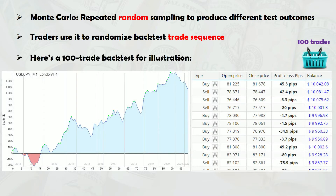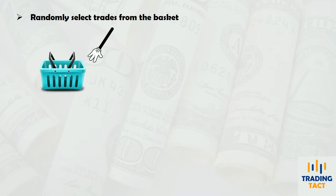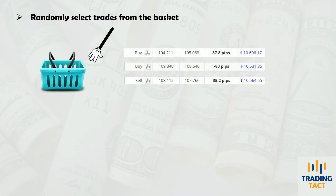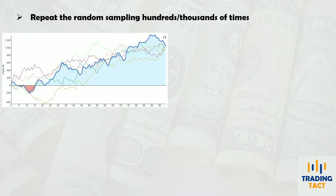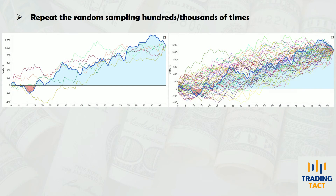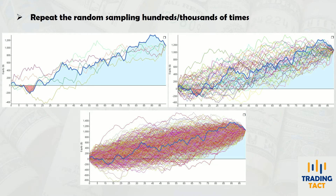Suppose you have performed a backtest and have a basket of 100 trades obtained over your backtest period. You begin randomly selecting trades from the basket, one at a time, until the basket is empty. You piece together each of the 100 trades in the order selected, producing a new equity curve. Now repeat this for hundreds or even thousands of times, and you have a whole bunch of new equity curves. This is what the characteristic straw broom charts represent — a collection of simulated equity curves.